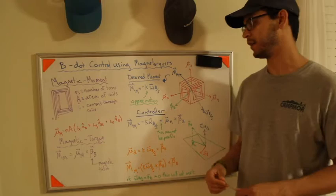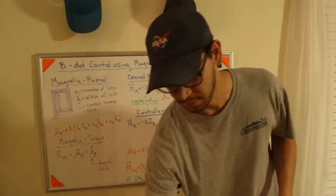Okay, welcome to the next part of the seminar series on Low Earth Satellites. Today we're going to talk about BDOT control using magnetorquers.